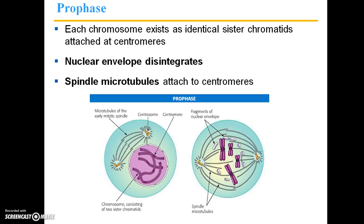During prophase, each chromosome exists as identical sister chromatids that are attached at their centromeres. The centromere is the place where these sister chromatids are joined at the hip. During prophase, the nuclear envelope disintegrates — this envelope surrounding all of that DNA is going to break away, and it needs to break away in order for those chromosomes to become attached to the spindle fibers. The spindle microtubules reach out and attach themselves to the centromeres, so we've got spindle microtubules attached to each sister chromatid.